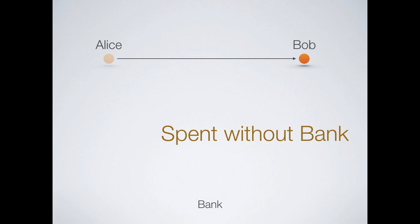This is known as the double spend problem. Many eCash systems have it, and many have mitigations. There are fancy things you can do to detect when it happens, and you can rely on traditional legal mechanisms. Double spending isn't completely alien to traditional finance either — you can double spend a check by writing checks to two people when you only have funds for one. We have mechanisms for dealing with this through legal frameworks, certified checks, and so on. So it's not an absolute killer if your eCash system has this problem, but it's considered very poor.